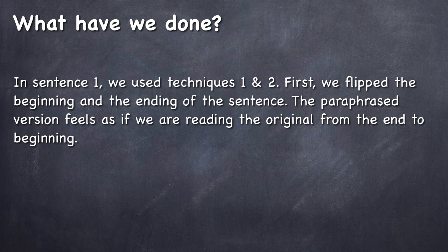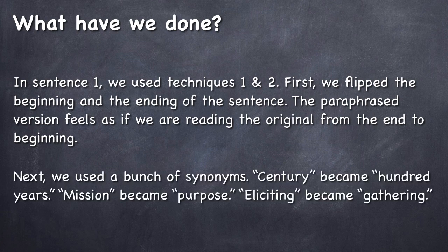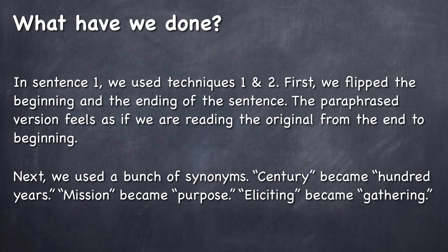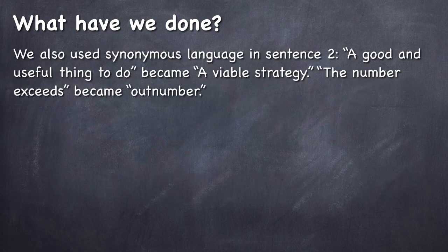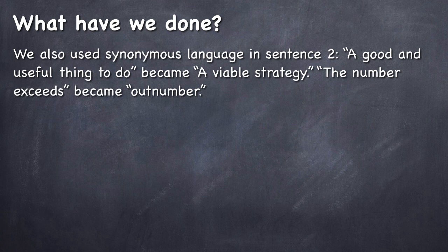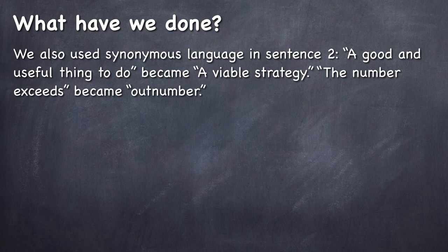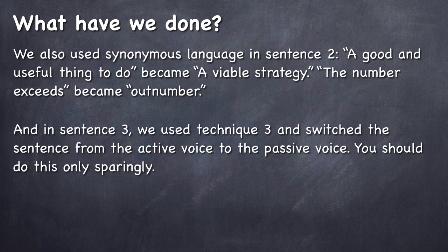Read the original and then read the paraphrase again and you will see the differences. Next, we used a bunch of synonyms. Century in the original became 100 years in the paraphrase. Mission became purpose. You see, these things are very synonymous. Eliciting became gathering. What else did we do? We also used synonymous language in sentence 2. So a good and useful thing to do became a viable strategy. These are synonymous things. Now, the number exceeds became outnumbered. Yeah, to exceed in number means to outnumber. Again, we're just using a bunch of synonyms.